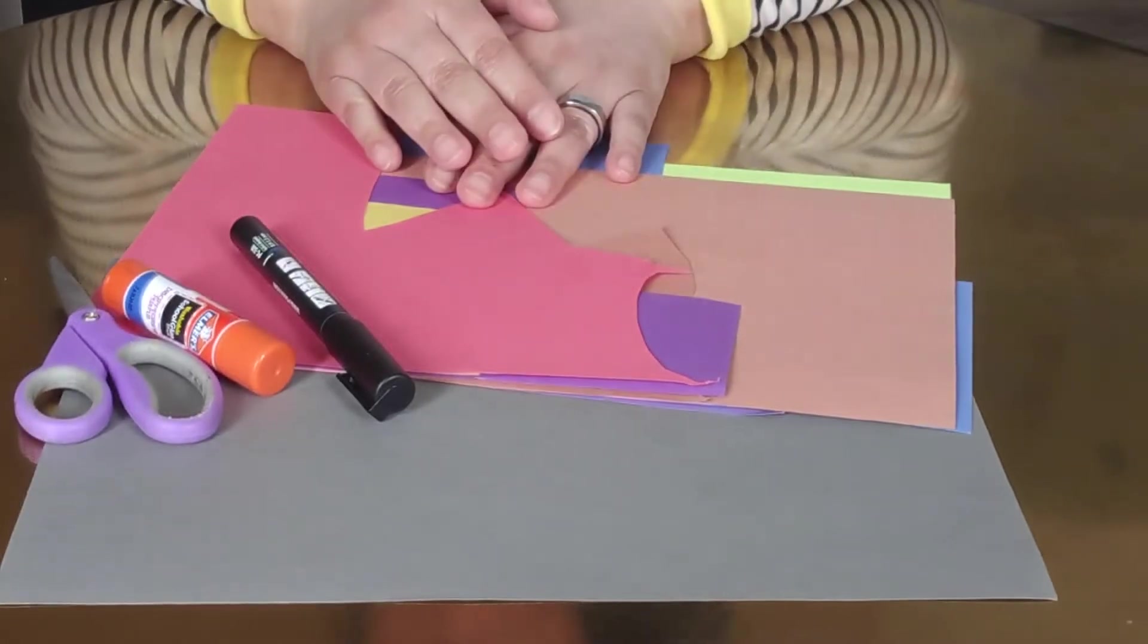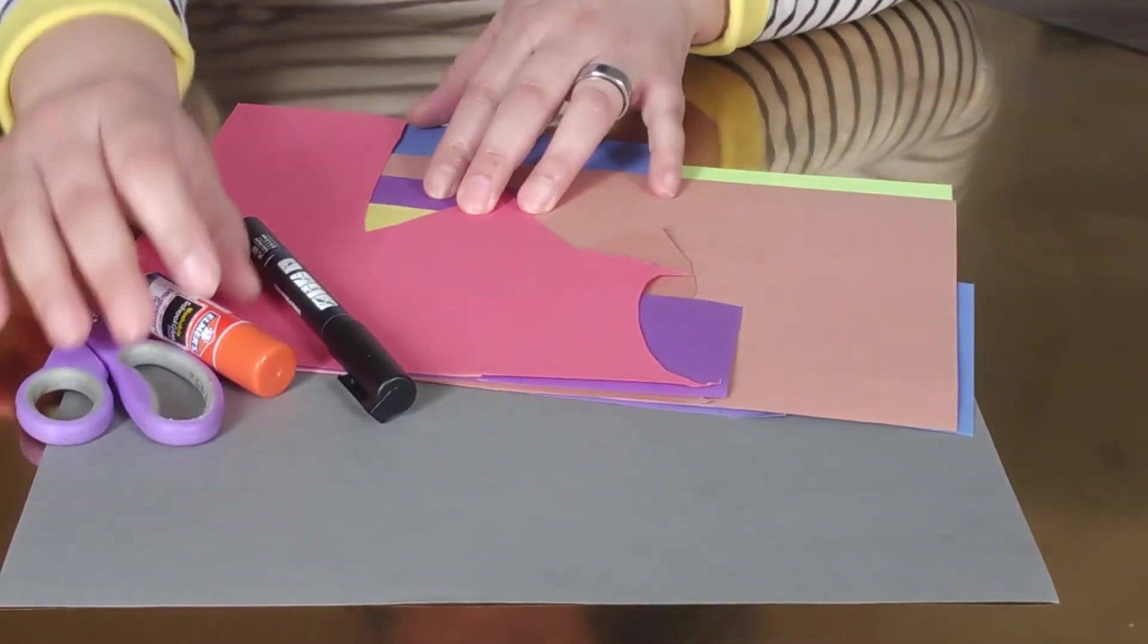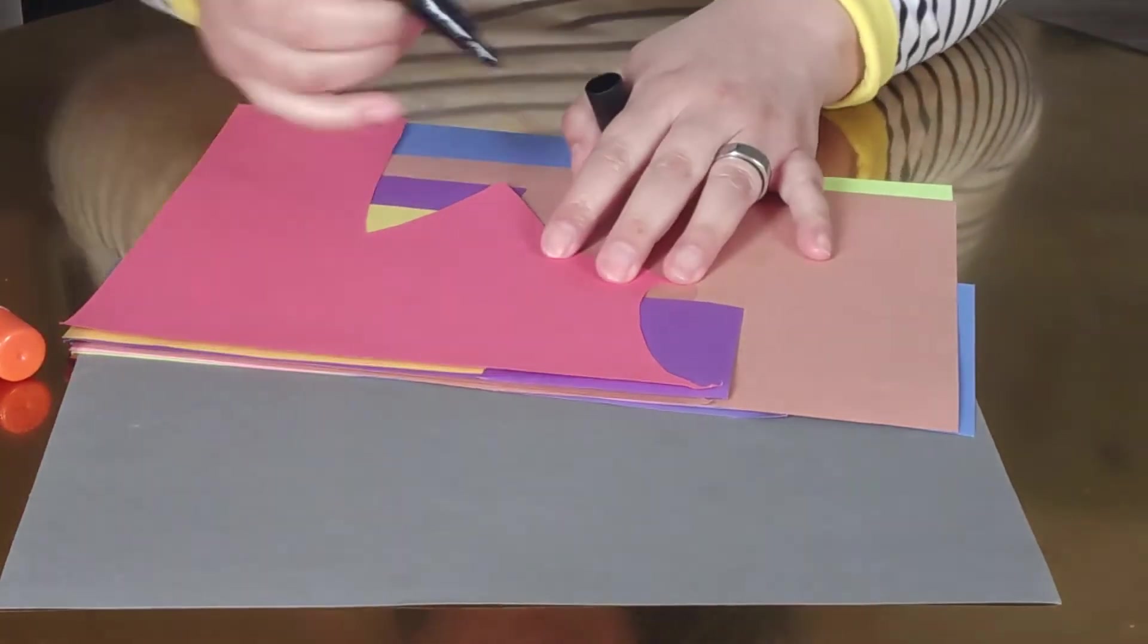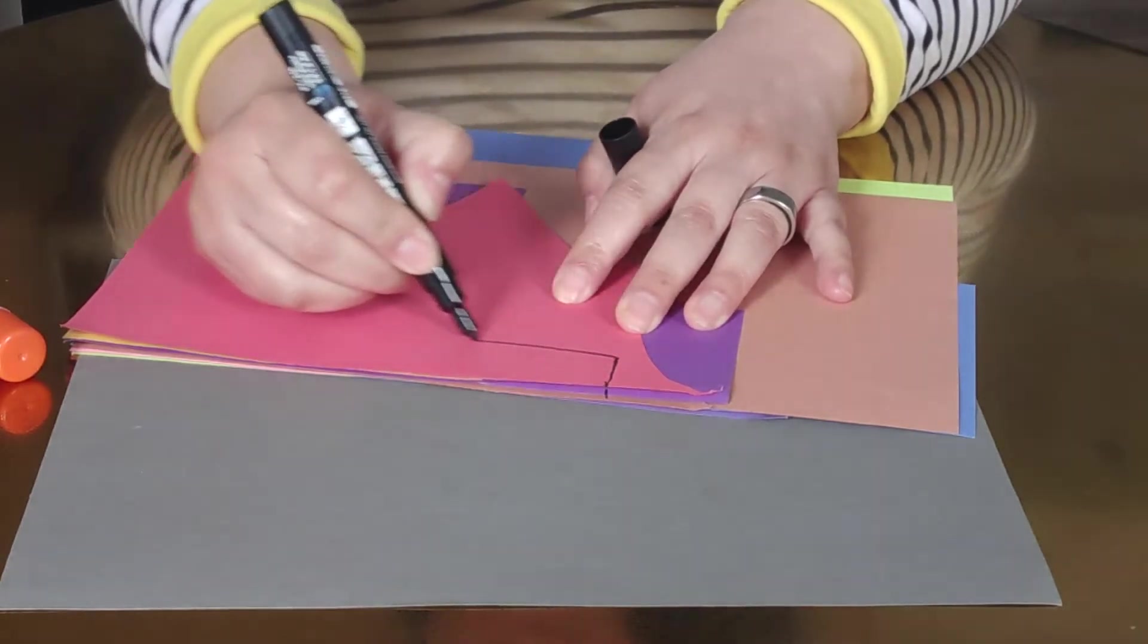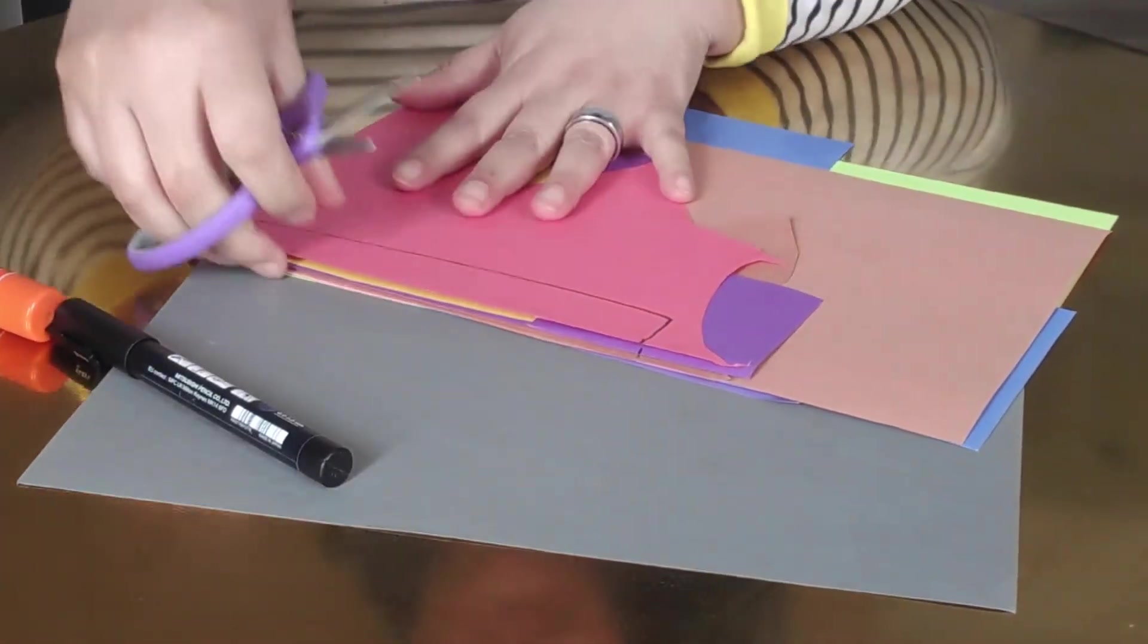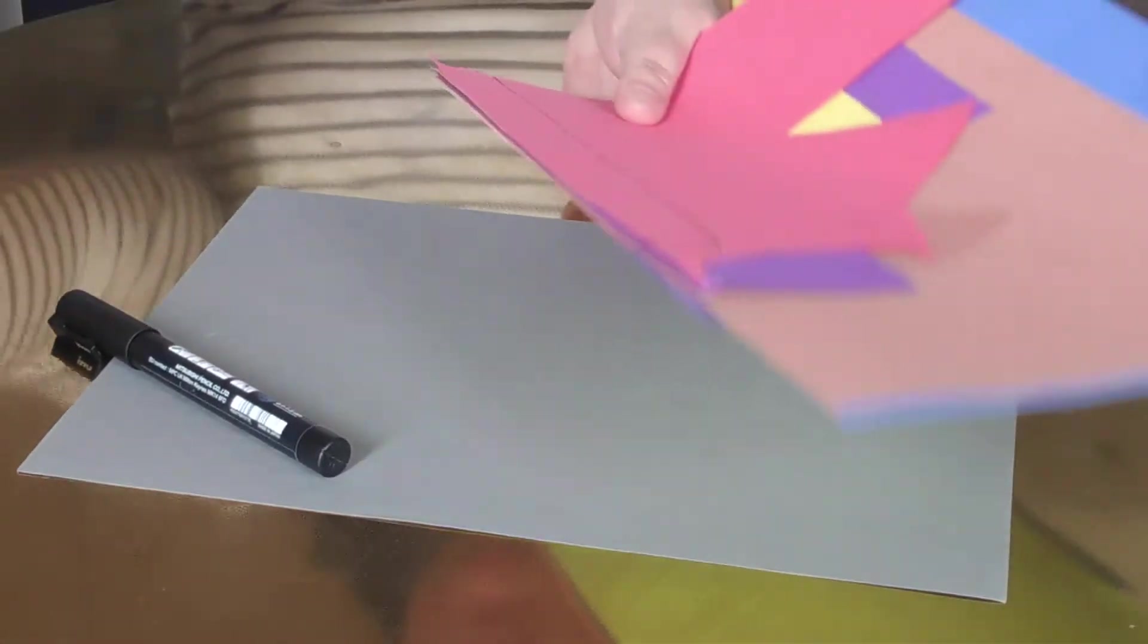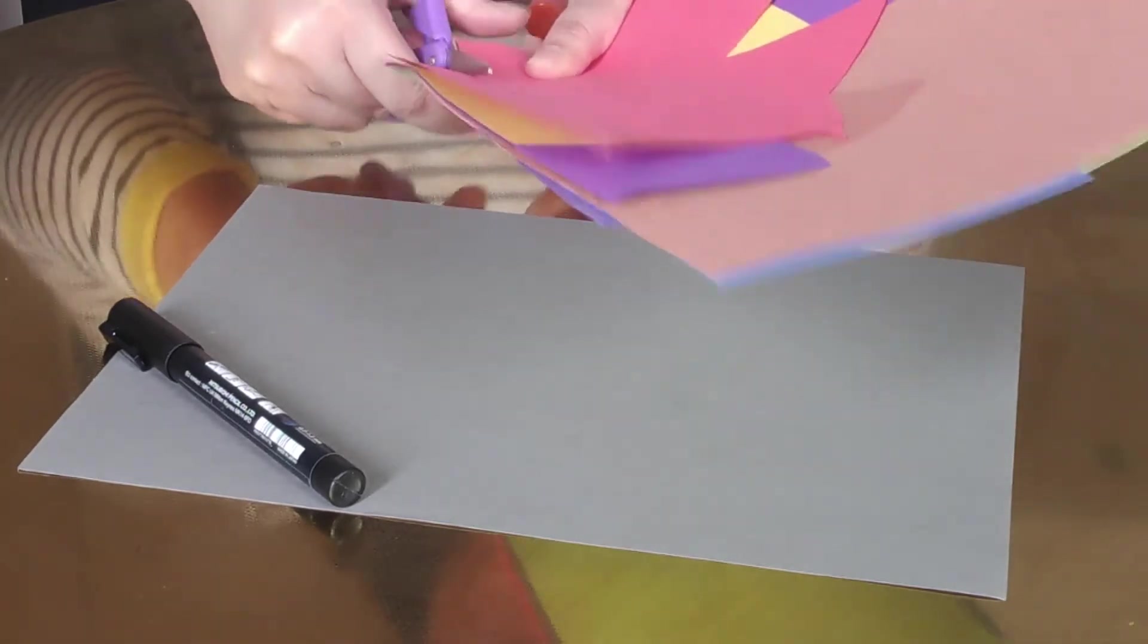We're going to practice cutting squares and using squares. So you'll want to use your marker and make strips of paper. I'm choosing to do them all at once. You can cut them one by one if you like.